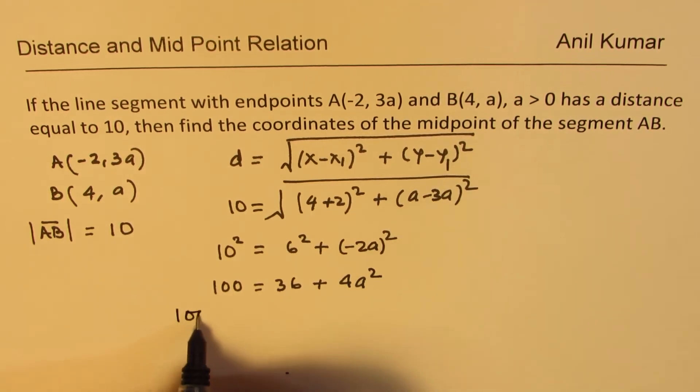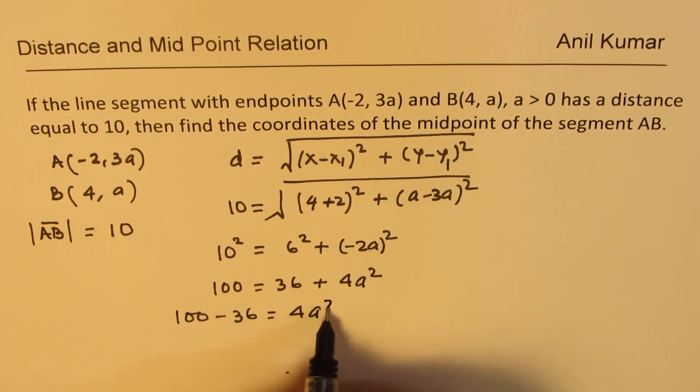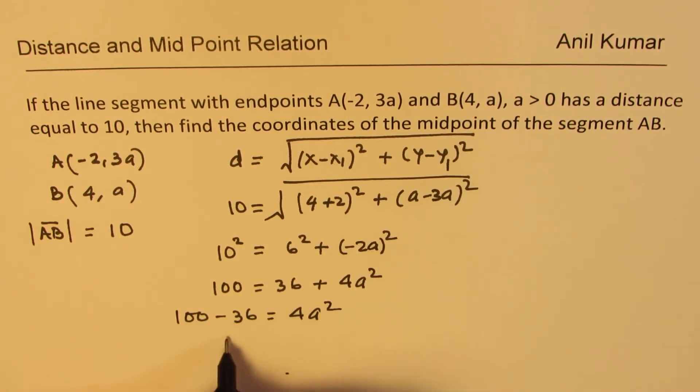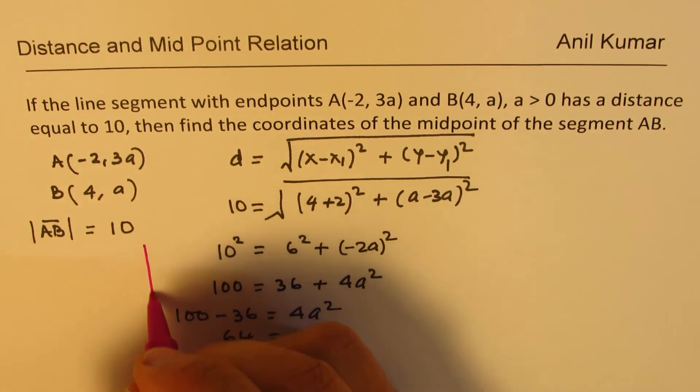Isolate a now. We get 100 - 36 = 4a², so 64 = 4a². From here, you can find what a is. 64 divided by 4 will be a².